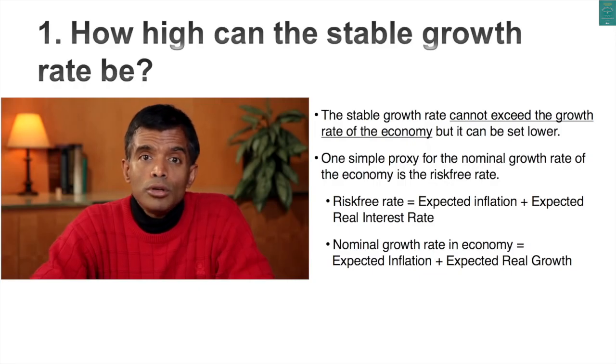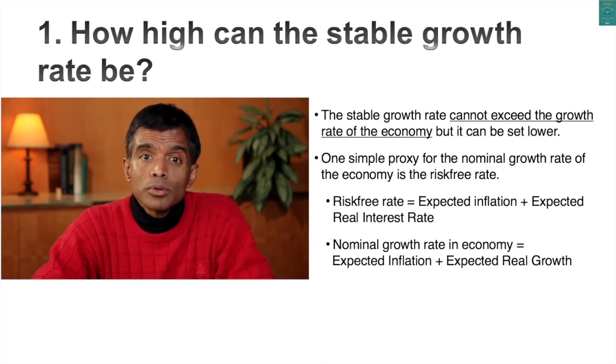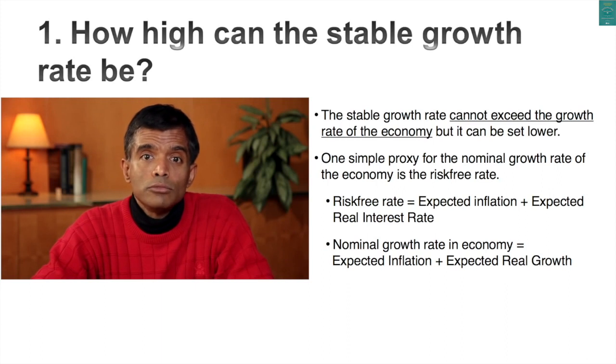First rule: make sure you don't exceed the cap. In a going concern terminal valuation, you assume your cash flows will grow at a constant rate forever. That growth rate cannot exceed the growth rate of the economy. A proxy you can use is the risk-free rate. Think about what goes into the risk-free rate: expected inflation and an expected real interest rate — very similar to what goes into the growth rate of the economy. The risk-free rate is an excellent proxy for the nominal growth rate in the economy. Use it as your cap on your terminal growth rate.